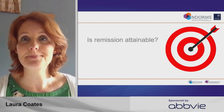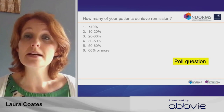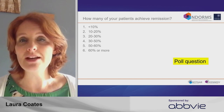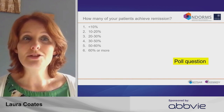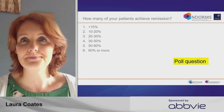So is remission attainable? If you think about remission in your patients — having that very good level of disease control and absence of disease, albeit on some treatment if required — how many of your patients do you think achieve remission in your routine clinical practice? Would it be less than 10%, 10 to 20%, 20 to 30%, 30 to 50%, 50 to 60%, or over 60% of your patients achieving remission?